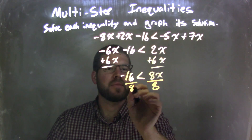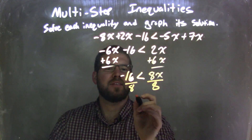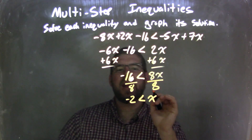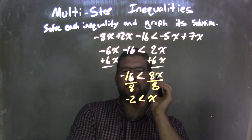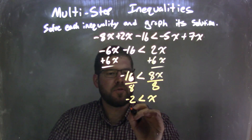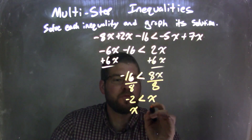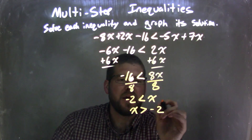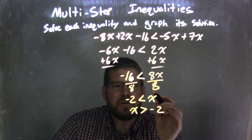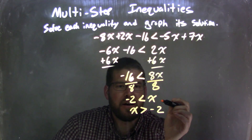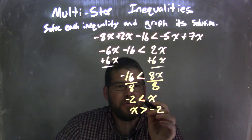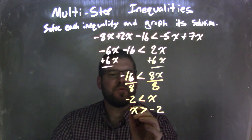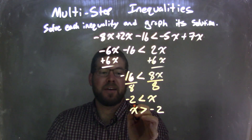I'm going to divide both sides by 8. Negative 16 divided by 8 is negative 2, so negative 2 is less than x. Now here's the tricky part — I want to have x written first. So I'm going to rewrite it with x first, which means I need to flip my inequality, and it becomes x is greater than negative 2. These two answers mean the same thing essentially.